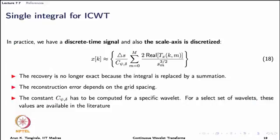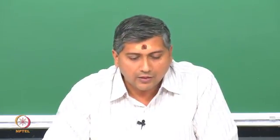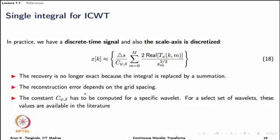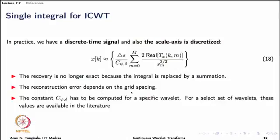These expressions for the dyadic case are given in the literature — in the paper by Torrence and Compo — and are what is implemented in MATLAB as well. Note that we use an approximation symbol: the recovery is no longer exact because we have replaced the integral with a summation. In DWT this is not the case, because the discretization chosen for scales allows exact recovery of x(t). The reconstruction error depends on the grid spacing, and C_{ψ,δ} can be computed for a specific wavelet.